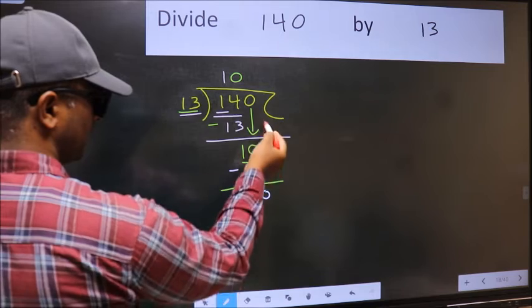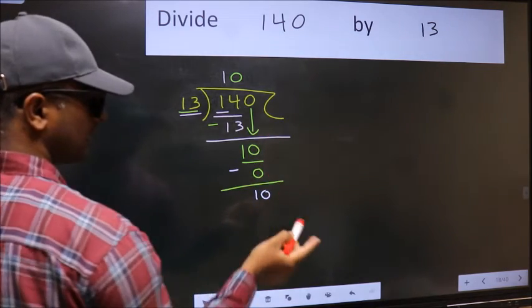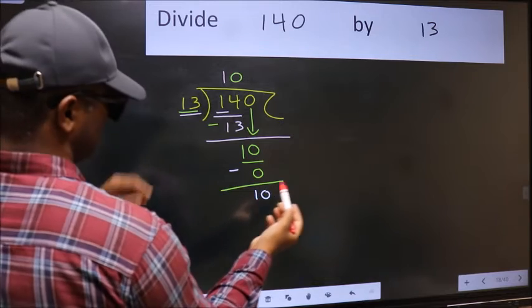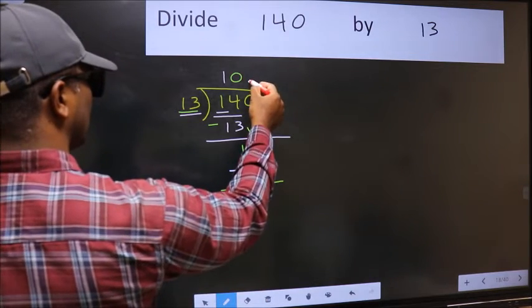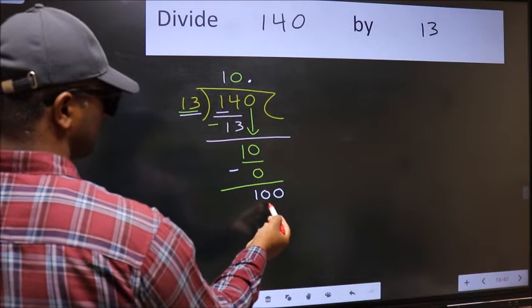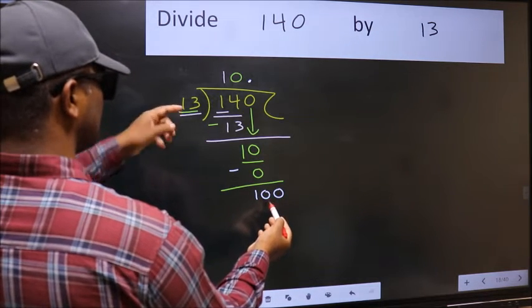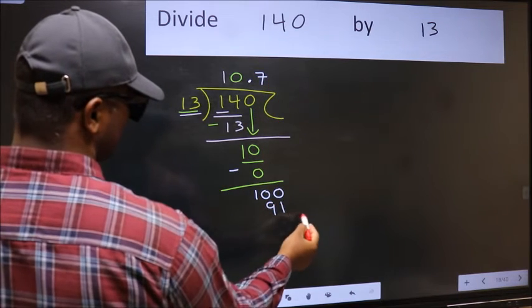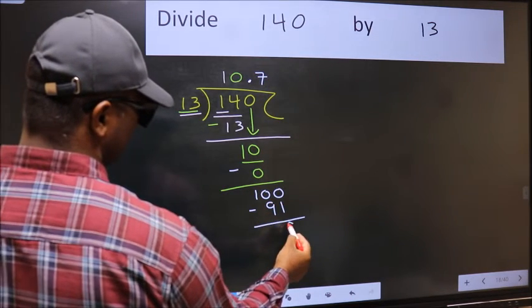Over here, we did not bring any number down, and 10 is smaller than 13. So now we can put the decimal point and take 0, making it 100. A number close to 100 in the 13 table is 13 times 7, which is 91. Now we should subtract. We get 9.